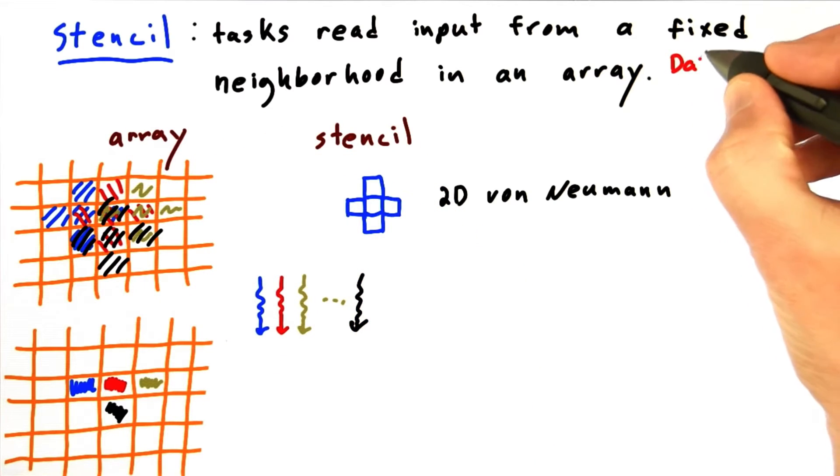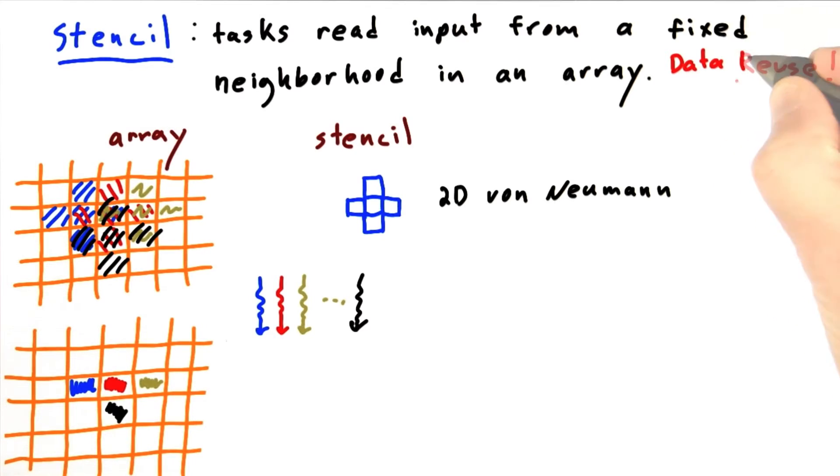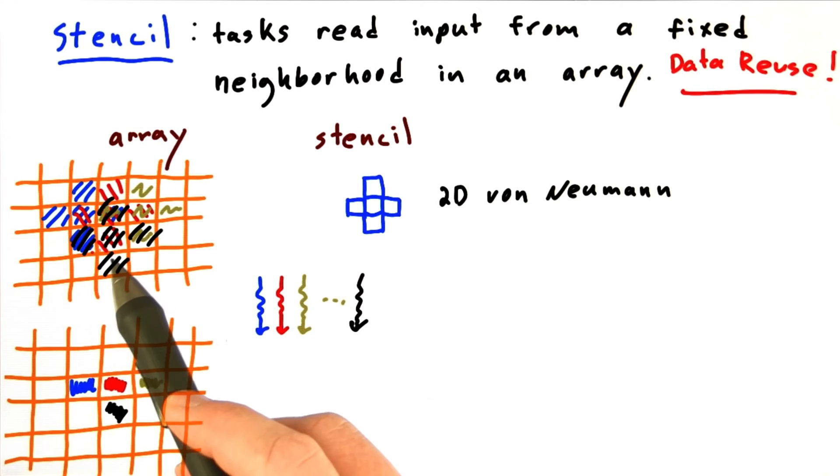Something you'll notice right away is that there's a lot of data reuse going on. Many threads are accessing and computing from the same data, and exploiting that data reuse is something we'll use later when you're working on your homework assignment. We're going to try to exploit that reuse to speed up your homework.